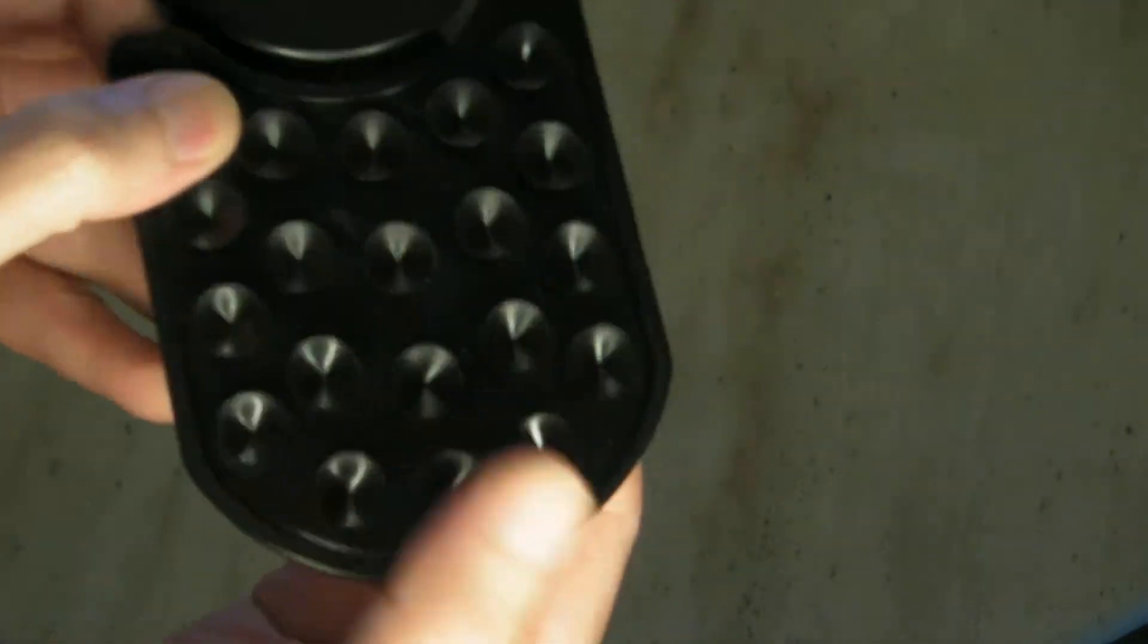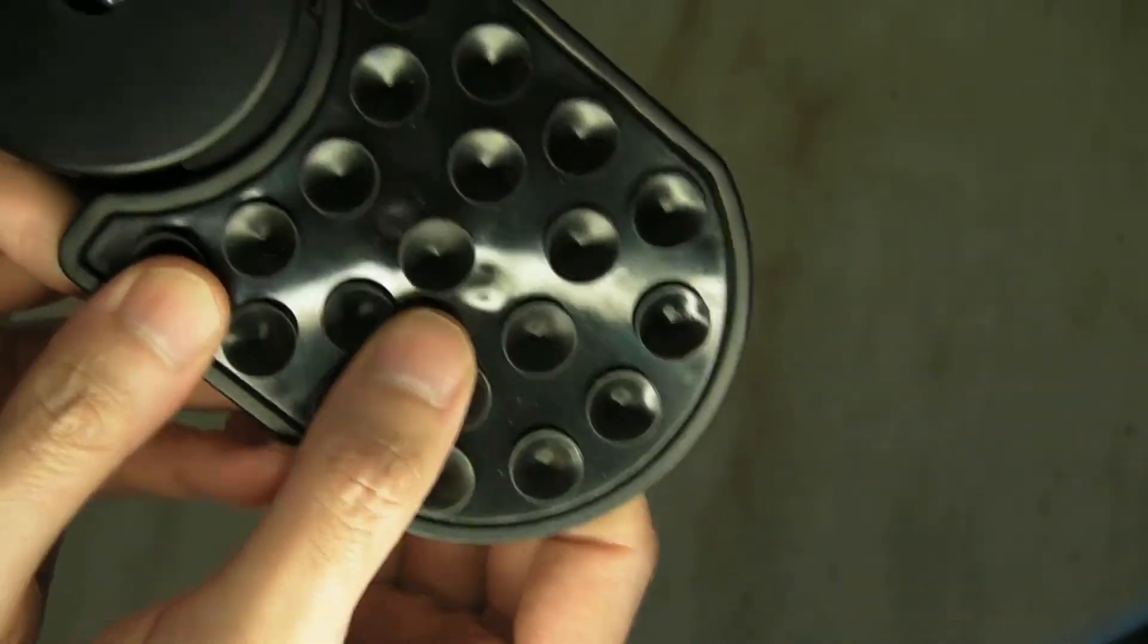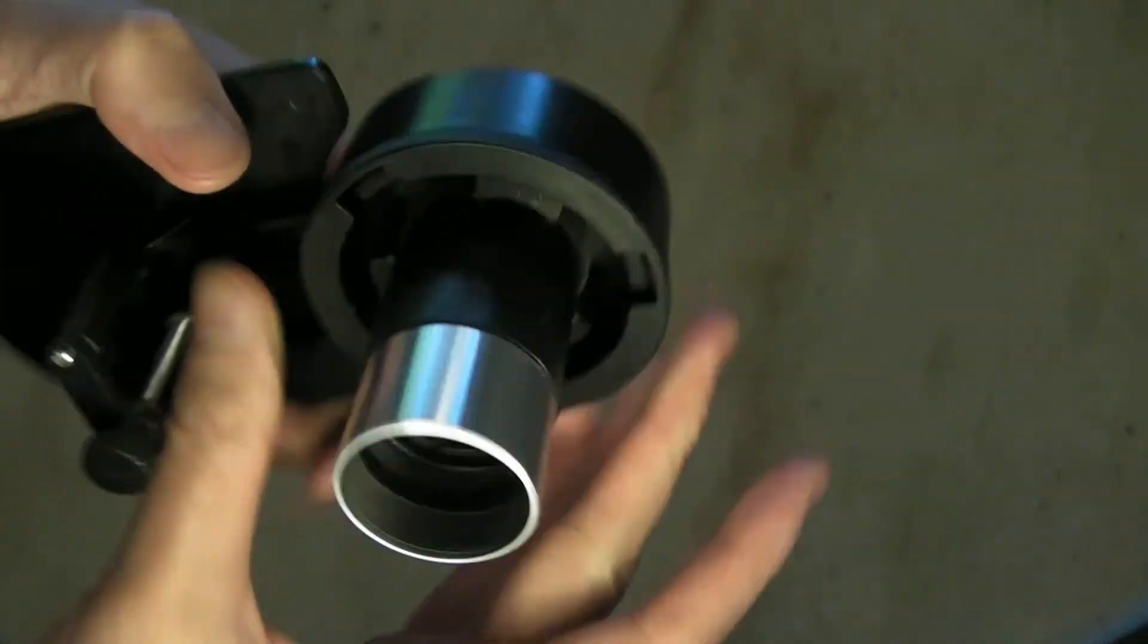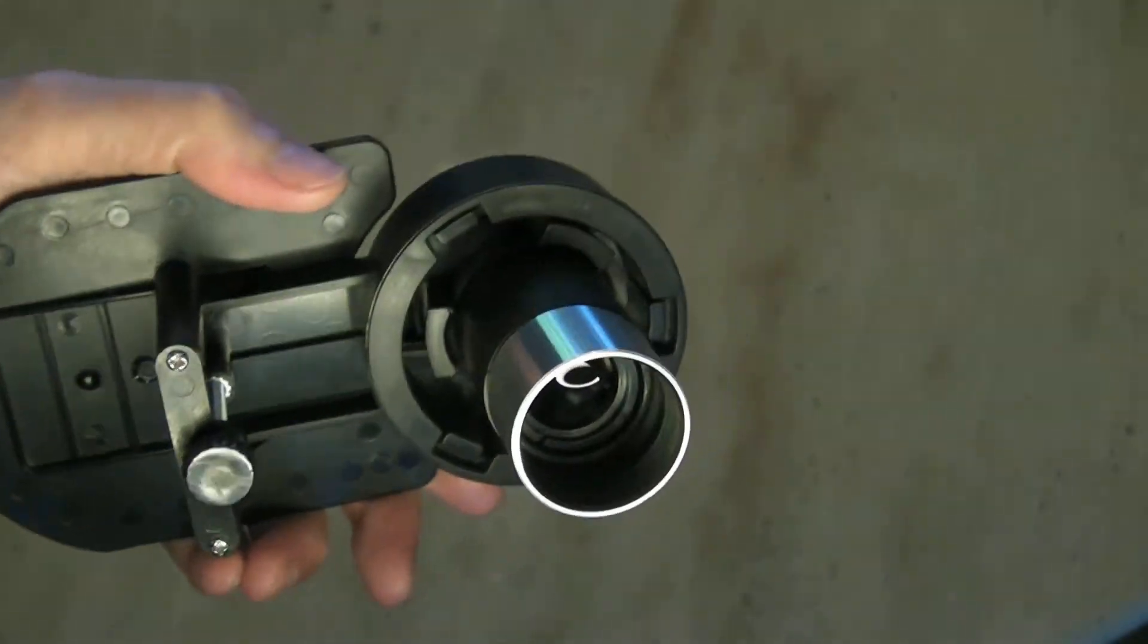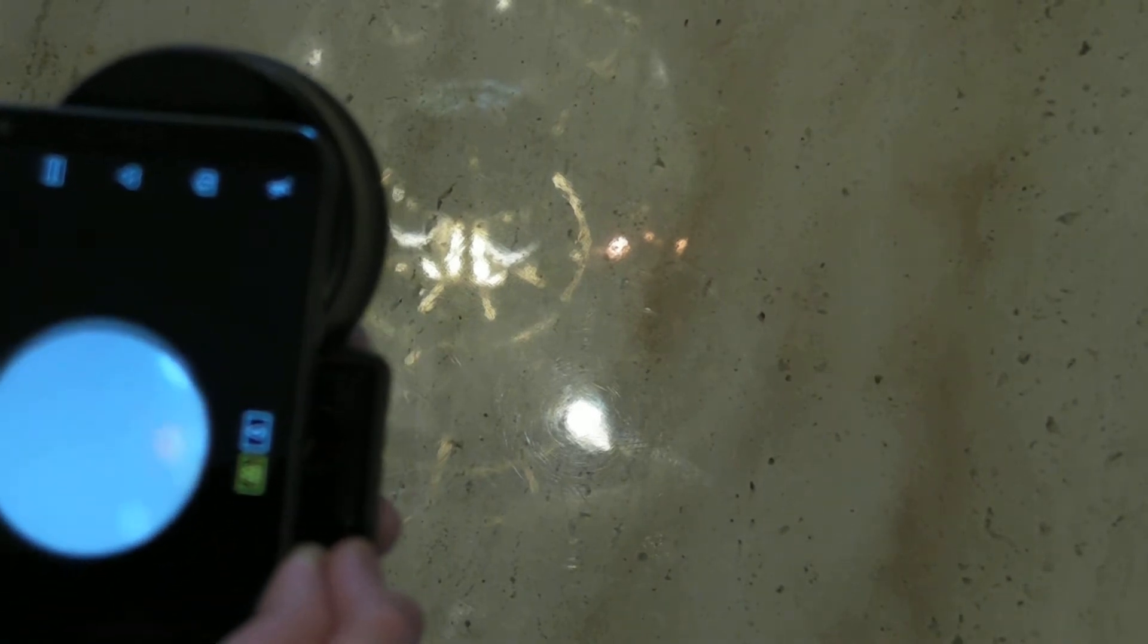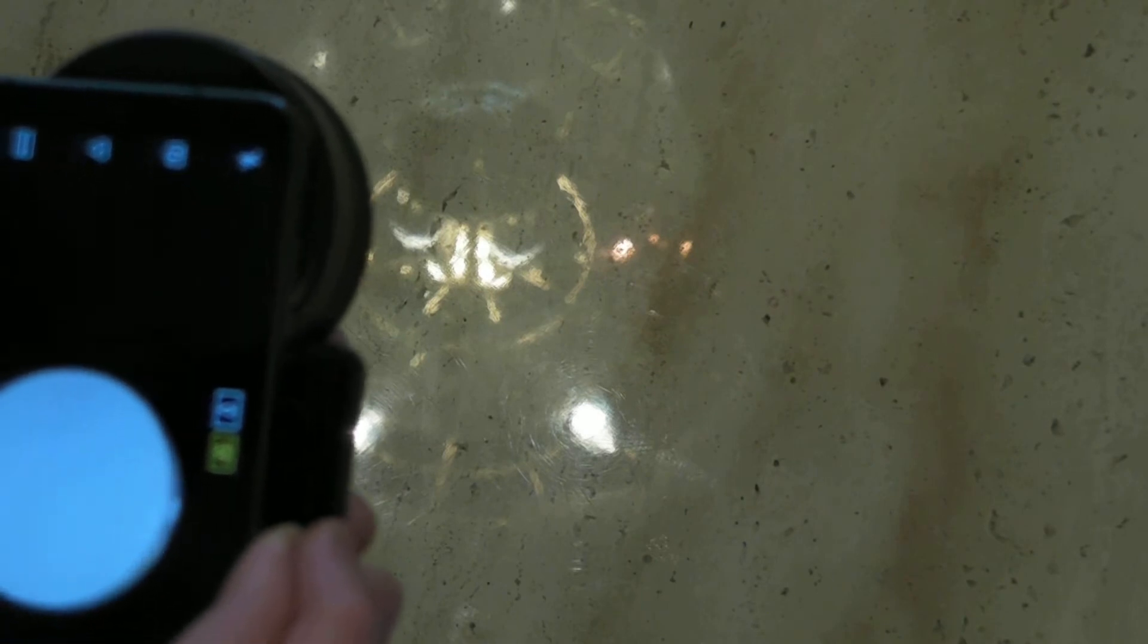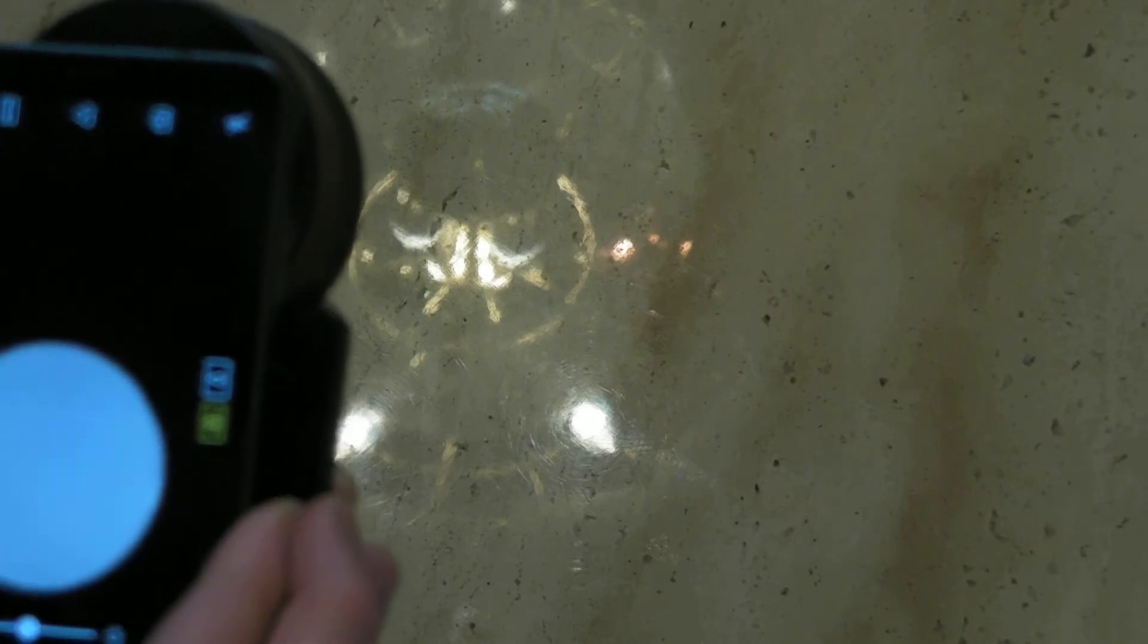This part is like suction cups that stick to your phone. Next get your cell phone and look at where your cameras are. And then just put your cell phone camera right in the center of the lens and press down.